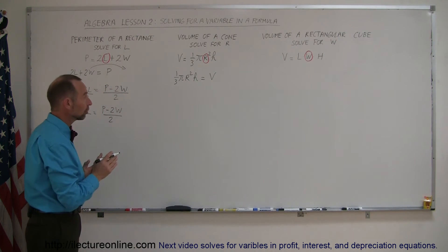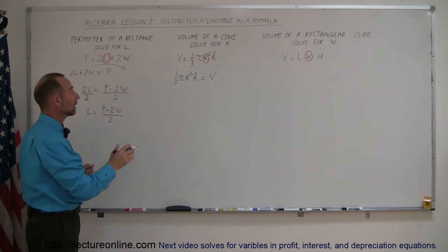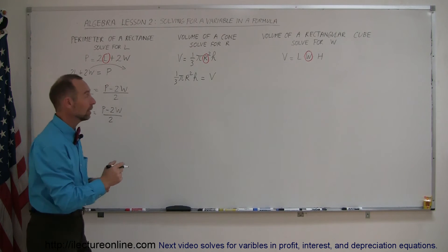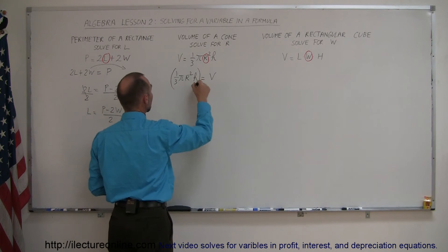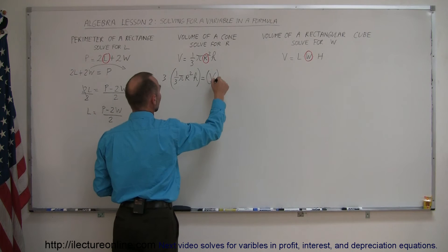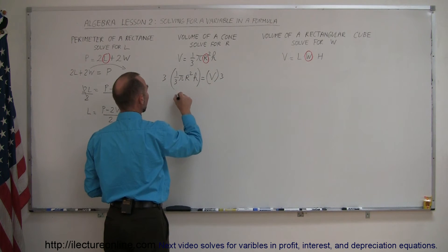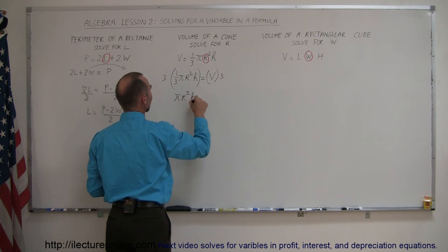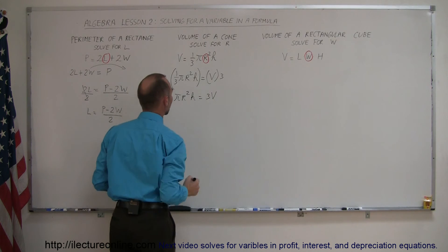Now, since in this case there's a fraction, we want to multiply both sides by the number in the denominator, that's 3. So multiply the left side by 3 and multiply the right side by 3. That will cancel out this 3, and we end up with pi r squared h on the left side and 3V on the right side.